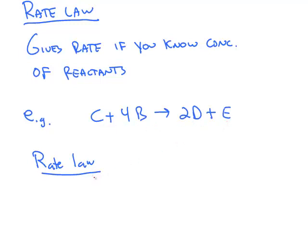The rate law always has the same form. The rate law's form is rate on the left is equal to a lowercase k, which stands for the rate constant, times the concentration of the first reactant raised to some unknown power x, times the concentration of the next reactant raised to some unknown power y.